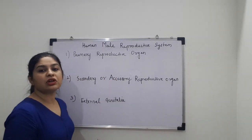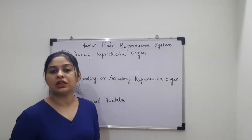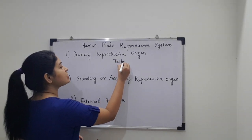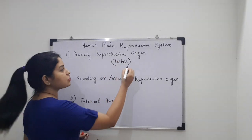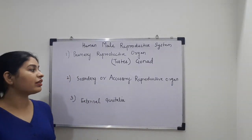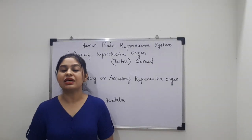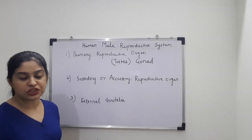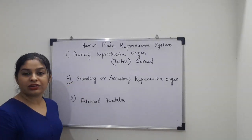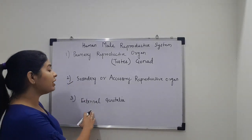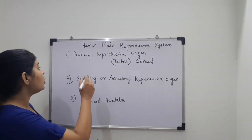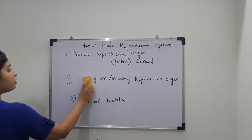Primary reproductive organs are those organs which are participating in the process of reproduction directly. In the case of a male, the testis is the primary reproductive organ — also called the male gonad. Secondary or accessory reproductive organs are those which assist in the process of reproduction indirectly. The external genitalia is the part of the reproductive organ which is present externally. We are going to detail the testis first.